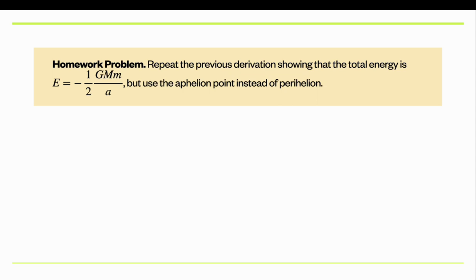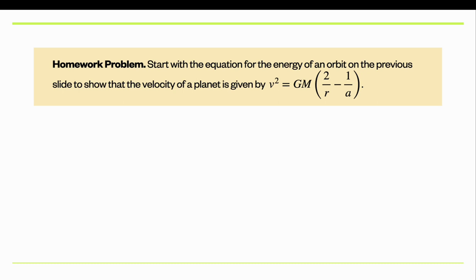One of your homework problems is to repeat this calculation but pick the aphelion point instead of the perihelion point. If you follow the derivation on the previous slide, this should be pretty straightforward. The second homework problem is to derive the velocity of the planet as a function of its radial distance from the star, starting with the result we just derived and expressing velocity in terms of just the radial coordinate r and the semi-major axis a.